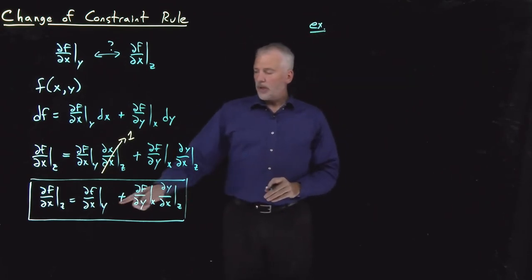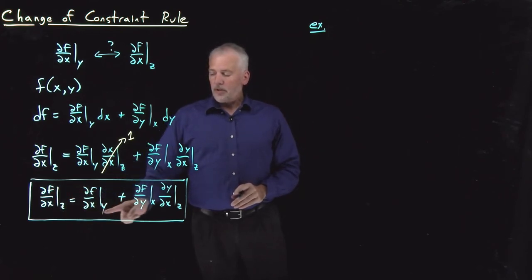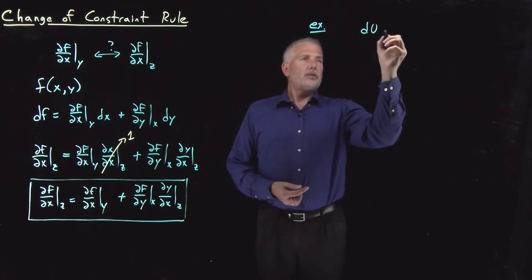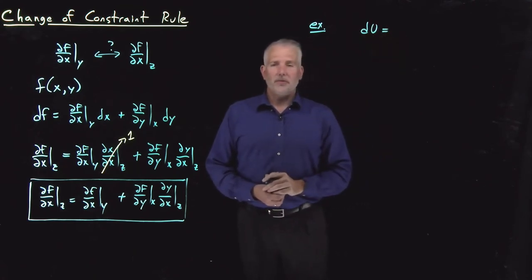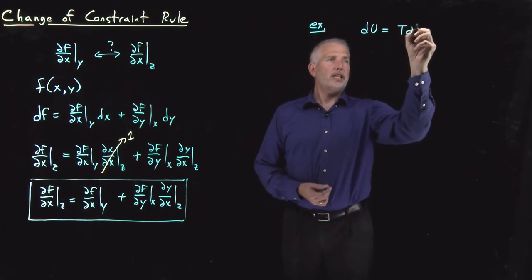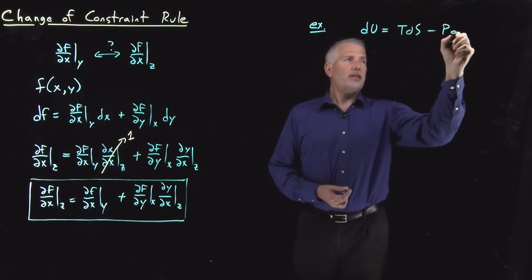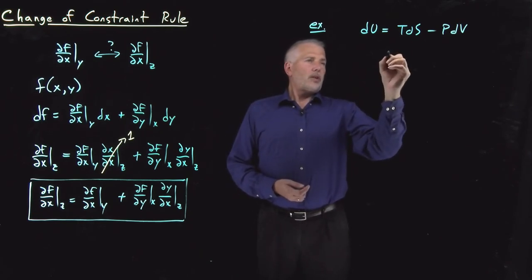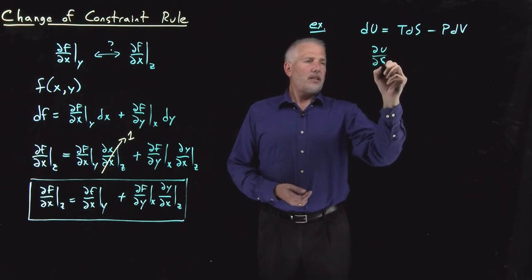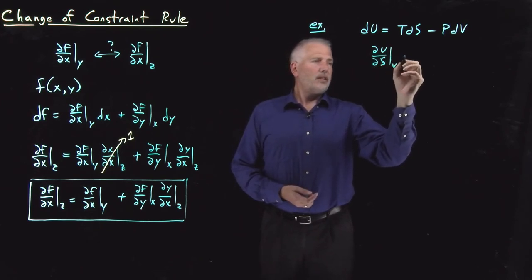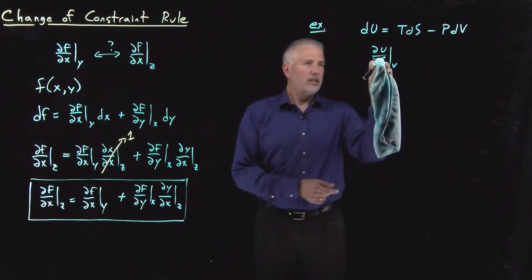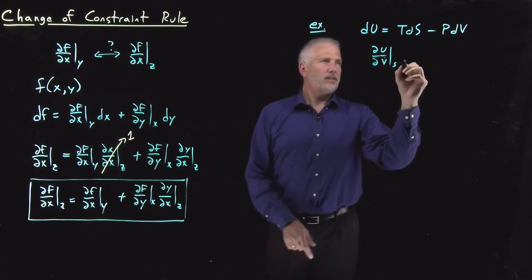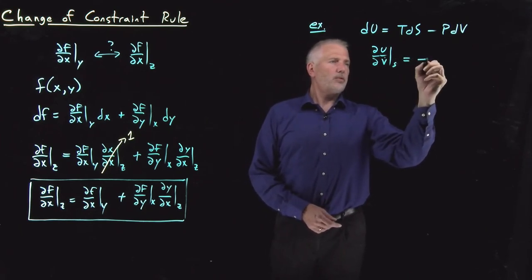For an example where we want to know a derivative that we can evaluate at two different constraints, I'll remind you that we already know from the fundamental equation for du, du is equal to TdS minus PdV. So we know that ∂u/∂V at constant S, that's not the one I want,